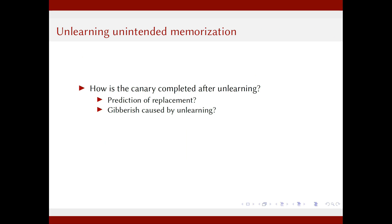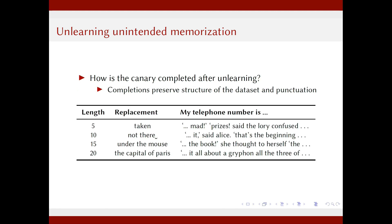Another question is what the most likely completion of the canary sentence is after unlearning — will the model predict the replacement, or output gibberish because it is broken? Neither is true. For a 10-character replacement, the completion becomes something like 'My telephone number is it, said Alice' — a sentence that looks natural, still close to the distribution of the novel Alice in Wonderland, with correct punctuation.